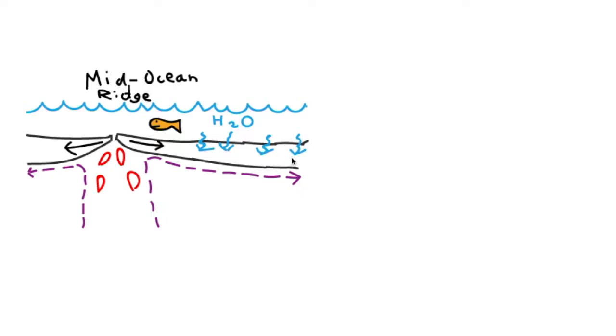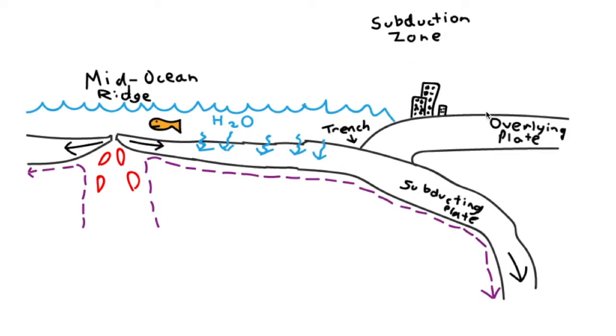Areas where one plate is sinking beneath another plate are called subduction zones. The sinking plate, also called the subducting plate, bends down and continues descending into the hot mantle.